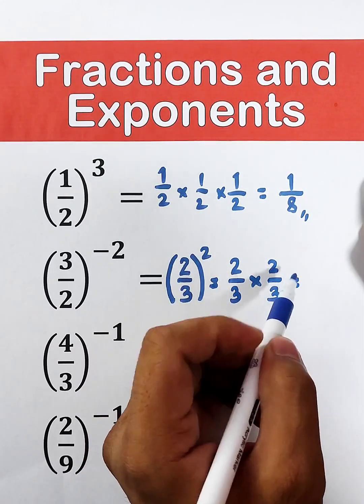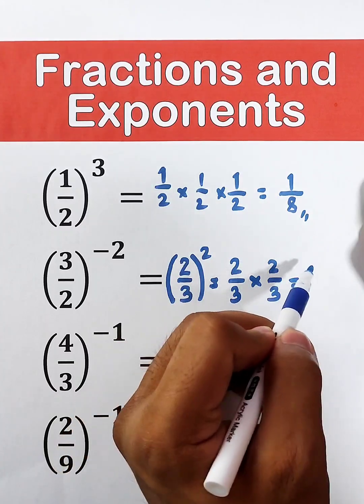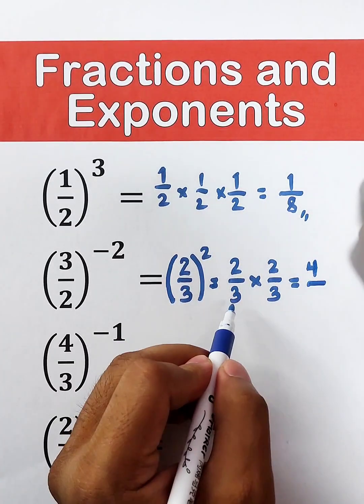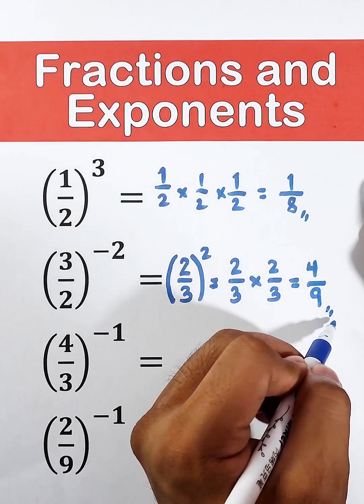And let's multiply. We have 2 times 2 which is 4, over 3 times 3 which is 9. And the answer is 4 over 9.